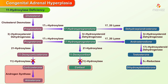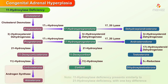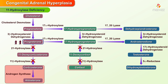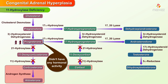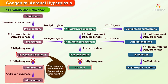11-hydroxylase deficiency: this enzyme is one step down the pathway toward making both cortisol and aldosterone. It presents similarly to 21-hydroxylase deficiency with one key difference. While the aldosterone precursor that accumulated with 21-hydroxylase deficiency did not have hormonal activity, the block in 11-hydroxylase allows 11-deoxycorticosterone to be made, which has a weak mineralocorticoid effect causing salt and water retention.